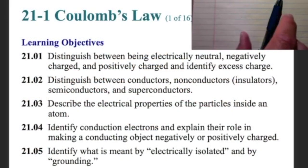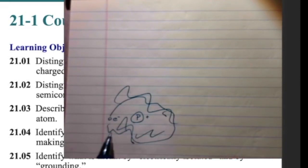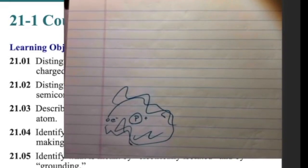Starting Chapter 21 Coulomb's Law. We need to distinguish between being electrically neutral, negatively charged, and positively charged, and identify excess charge. Let's take for example, hydrogen. The simplest case for my hydrogen atom. I have one proton and one electron. Protons are always positively charged, electrons are negatively charged. My electron is orbiting the proton, or buzzing around it in some way, but this is electrically neutral because I have the same number of electrons as I do protons.